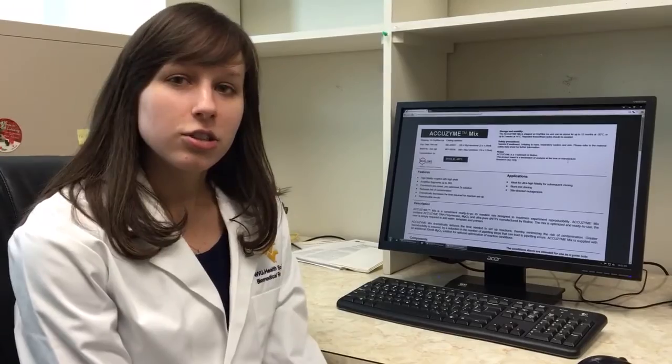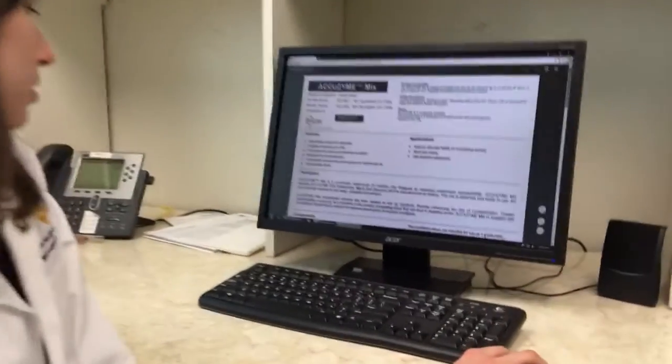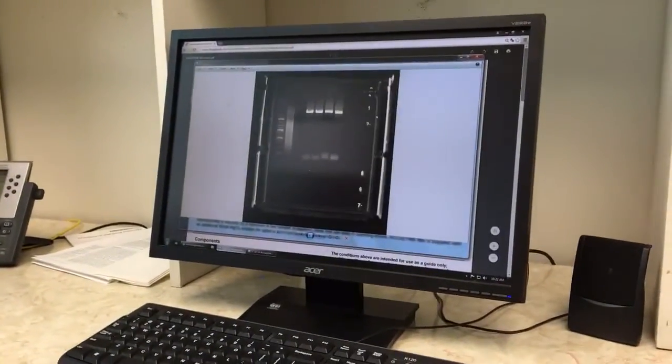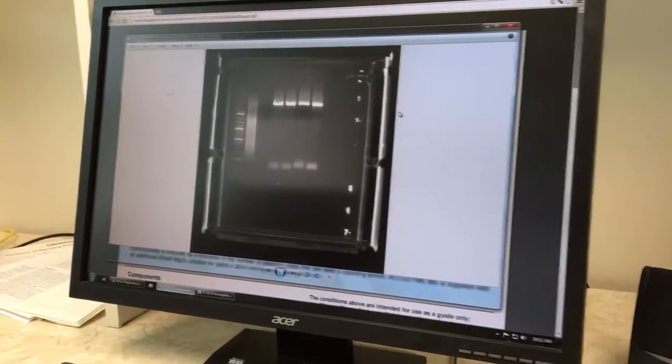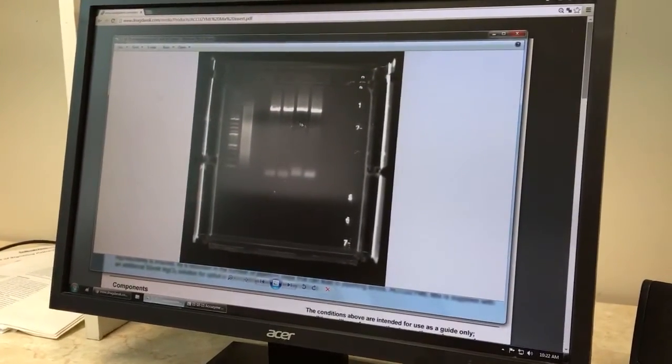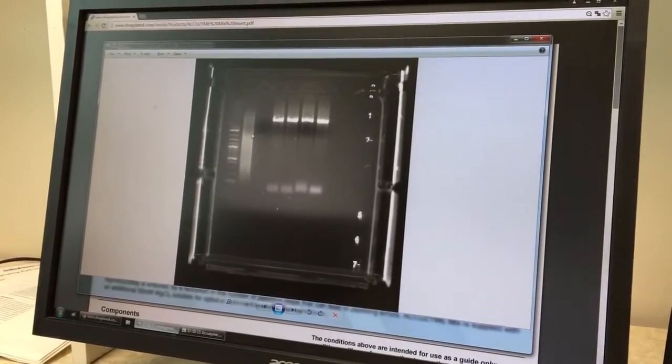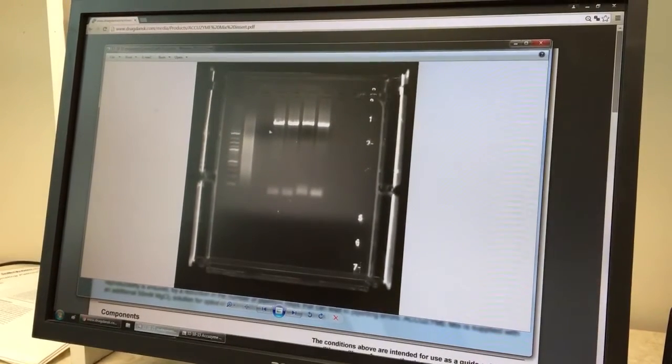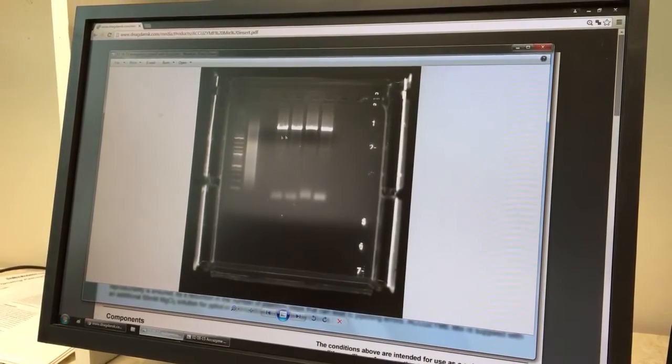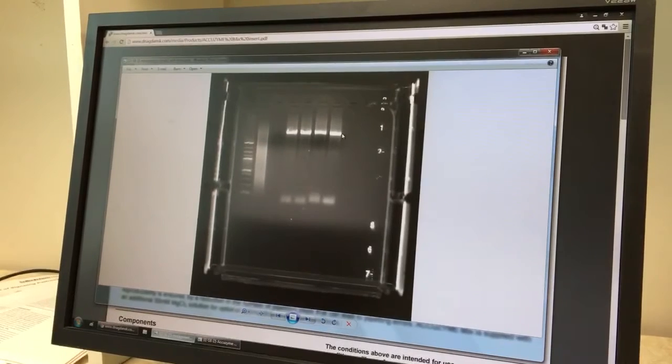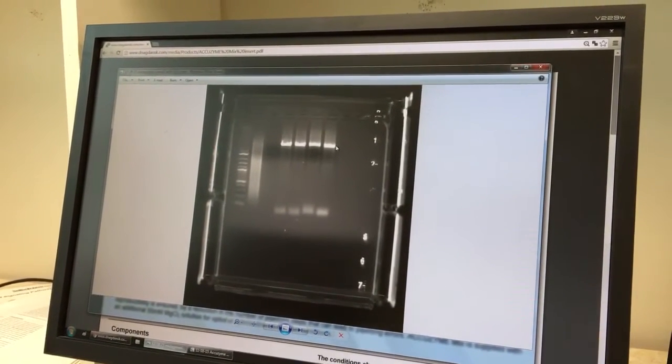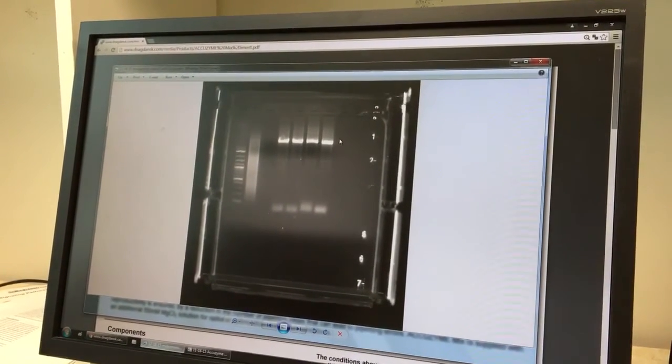So I have a couple gels I'd like to show you with my results. This first gel is my site-directed mutagenesis PCR. These first two lanes are controls and in the following four lanes you can see amplification of the plasmid showing that the PCR worked.